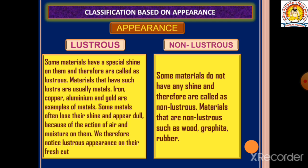Classification based on appearance is divided into two types: lustrous and non-lustrous. Some materials have a special shine on them and are therefore called lustrous. Materials that have shining capacity — when you look at them, they shine. Lustrous materials are usually metals, such as iron, copper, aluminum, and gold. Some metals often lose their shine and appear dull because of the action of air and moisture on them.